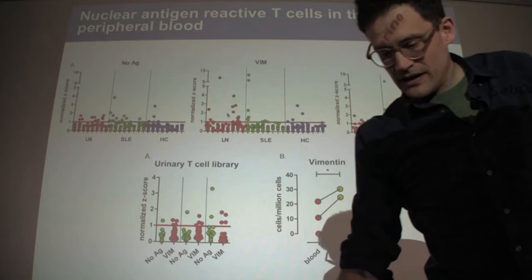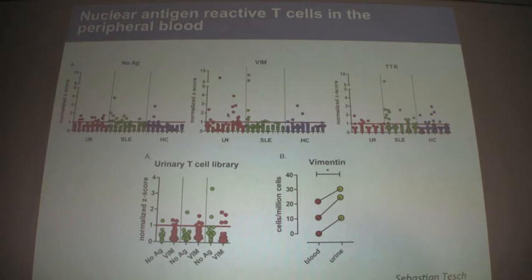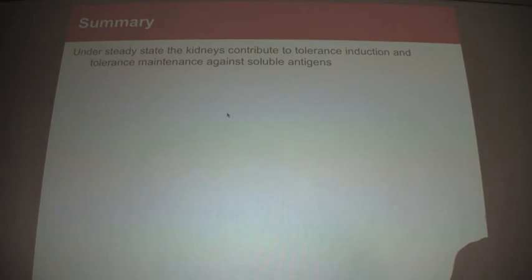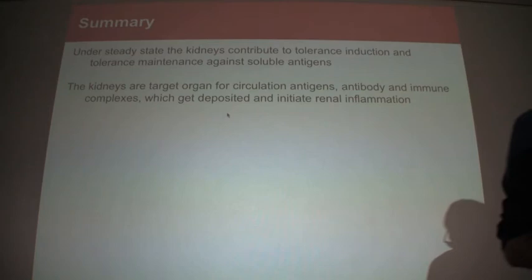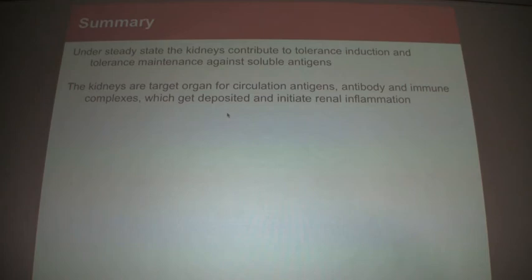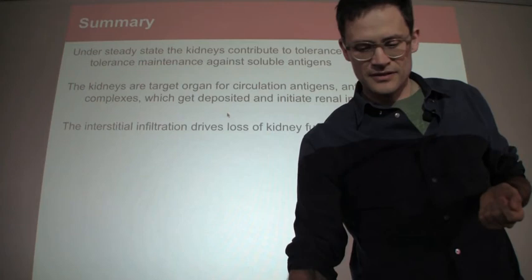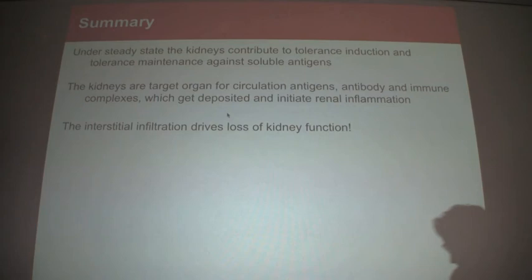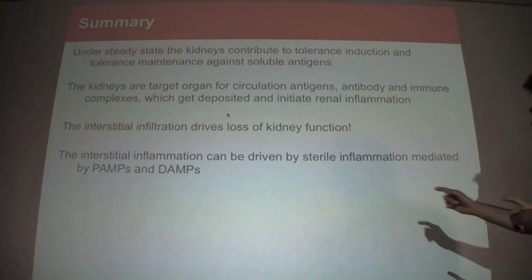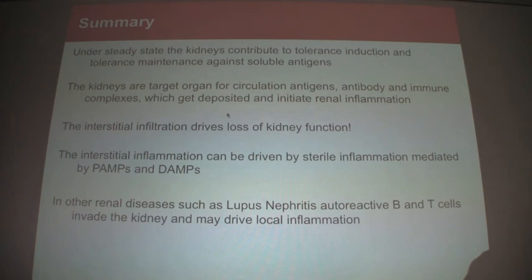So I would like to sum up: presumably under steady state, the kidney contributes to tolerance induction and maintenance against soluble antigens. However, the kidney is still a target organ for circulating antigens, antibodies, and immune complexes which get deposited in the glomerulus where they elicit renal inflammation. The interstitial inflammation drives loss of kidney function. Interstitial inflammation can be driven as a sterile inflammation by PAMPs and DAMPs. And in other renal disorders such as lupus, autoreactive B- and T-cells invade the kidneys and may drive local injury. Thanks for your attention, and I'm happy to take any questions.